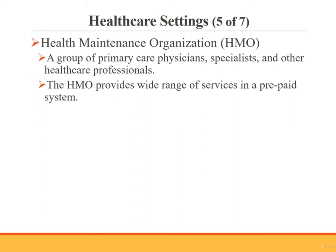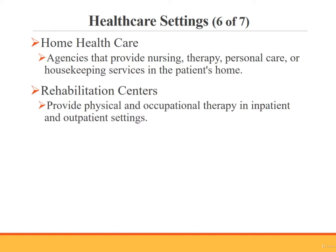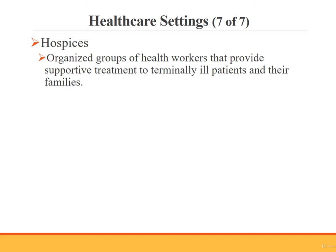A health maintenance organization is a group of primary care physicians, specialists, and other healthcare professionals that together provide a wide range of services in a prepaid system. Home health care is provided by agencies that offer nursing, therapy, personal care, or housekeeping services in the patient's home. Rehabilitation centers provide physical and occupational therapy in both inpatient and outpatient settings. Hospice is an organized group of health workers that provide supportive treatment to terminally ill patients and their families — these patients only need to be diagnosed with a terminal illness.